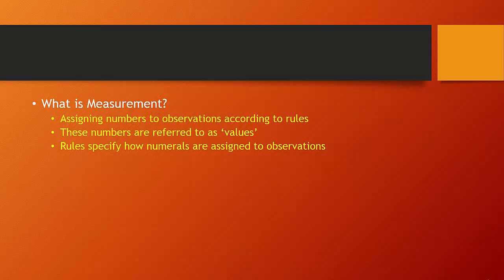Measurement is the process of assigning numerals to observations according to rules. These numerals are referred to as the values of the variable we're measuring. If we want to measure something, we have to make up a set of rules that specify how the numbers are assigned to our observations.